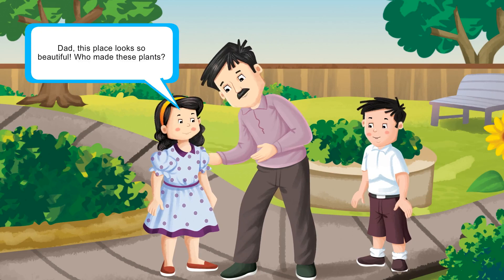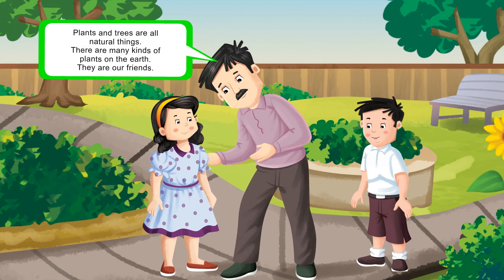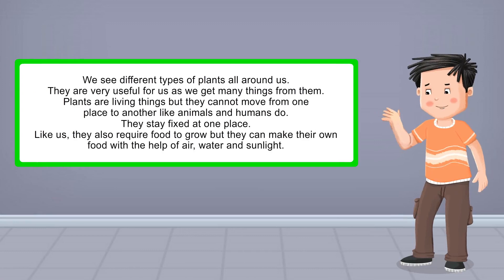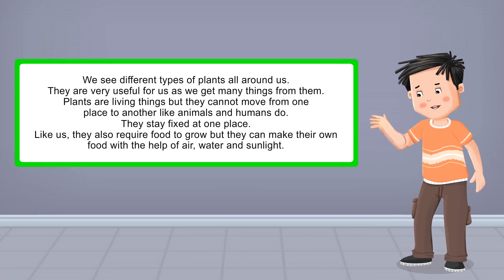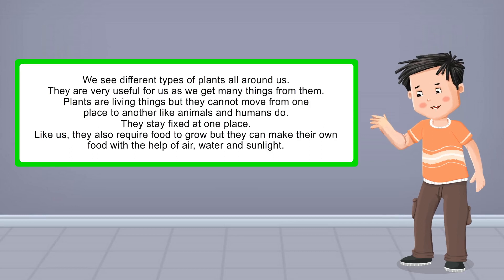Dad, this place looks so beautiful. Who made these plants? Plants and trees are all natural things. There are many kinds of plants on the earth. They are our friends. We see different types of plants all around us, and they are very useful for us. Plants are living things but they cannot move from one place to another like animals and humans do. They stay fixed at one place. Like us, they also require food to grow, but they can make their own food with the help of air, water and sunlight.